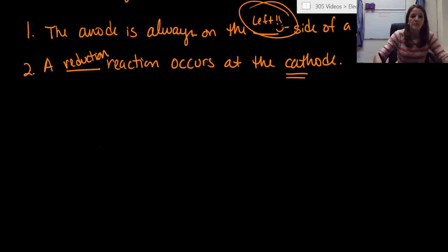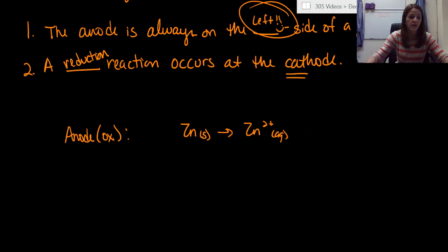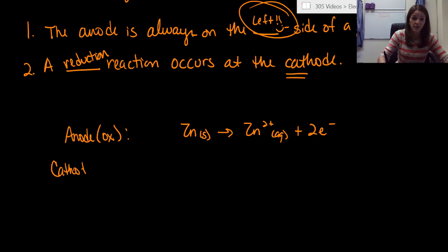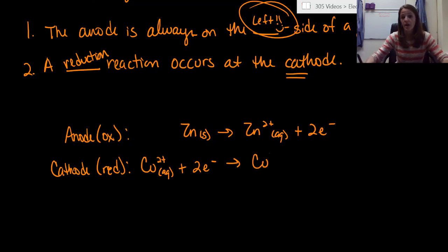Now let's do an example. At the anode we have an oxidation reaction: zinc solid goes to zinc 2+ (aqueous) plus two electrons. At the cathode we have a reduction reaction: copper 2+ (aqueous) plus two electrons goes to copper solid (copper zero).